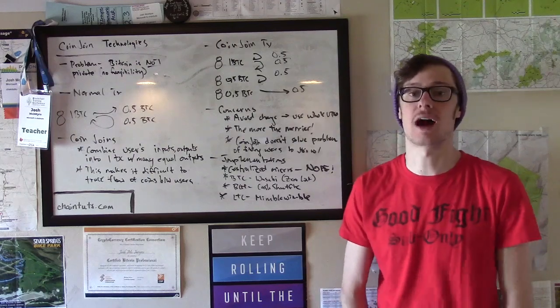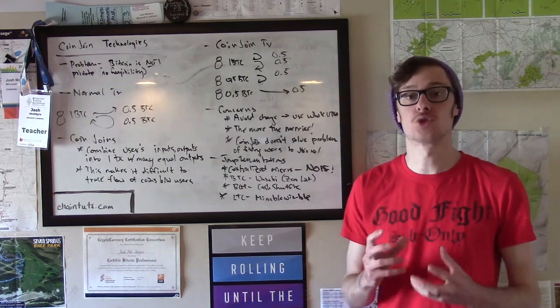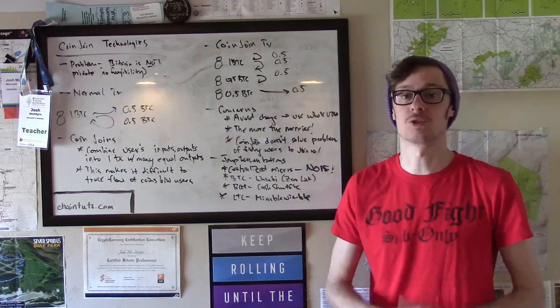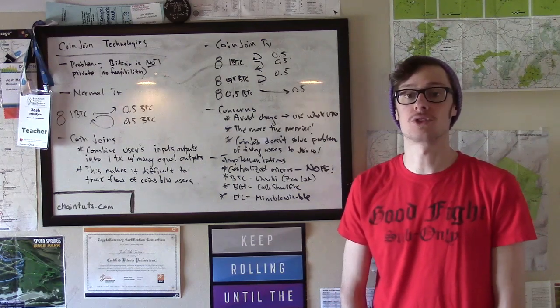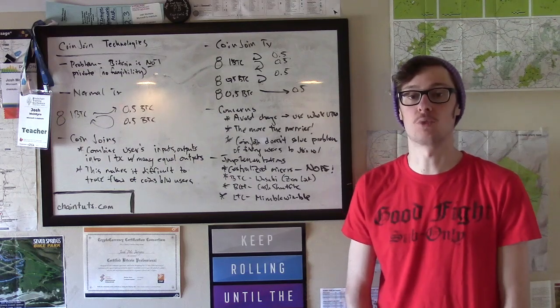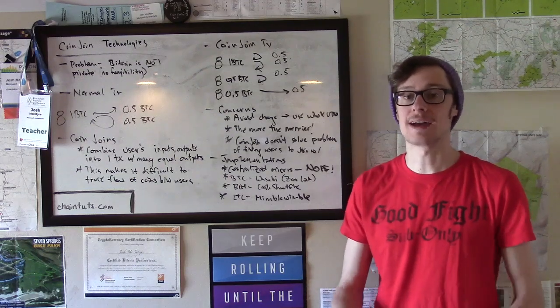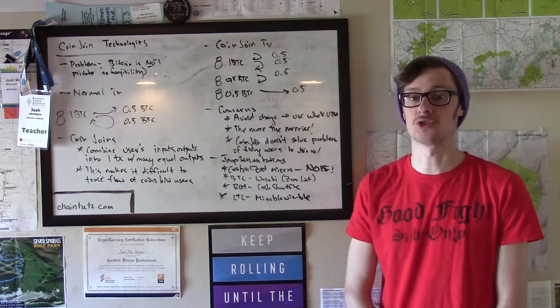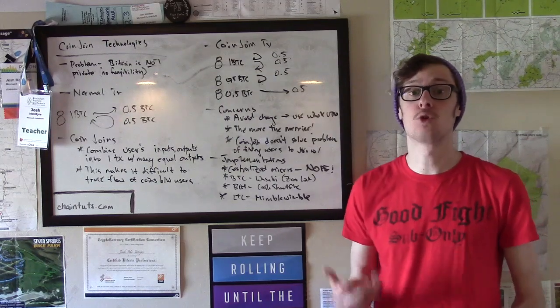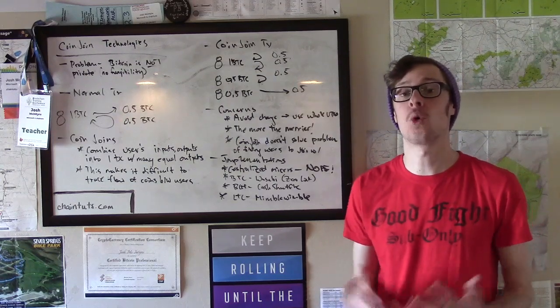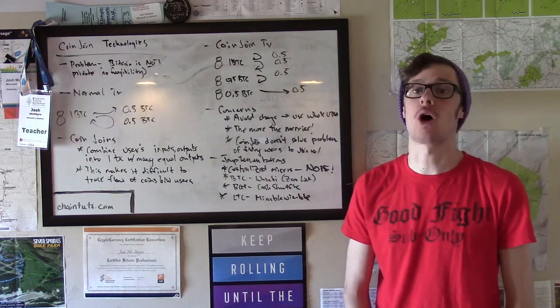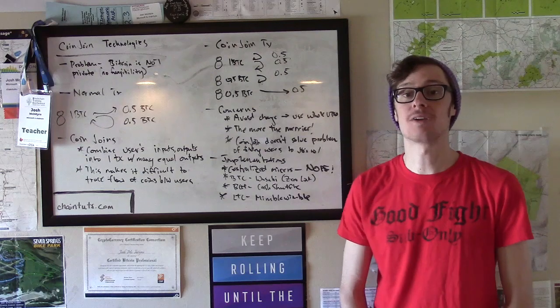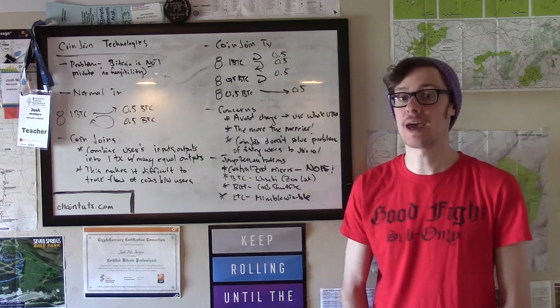Fungibility is the concept that individual tokens of a currency are indistinguishable from one another. For example, dollar bills are fungible. You can't tell the difference between one dollar bill or another as cash is exchanged around. But with Bitcoin, Bitcoin Cash, Litecoin, and many other UTXO blockchains, coins are actually traceable as they flow between different users on the network.